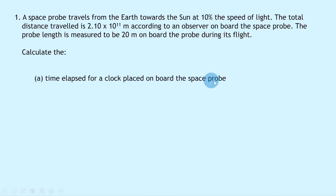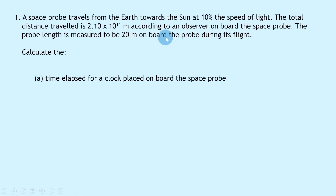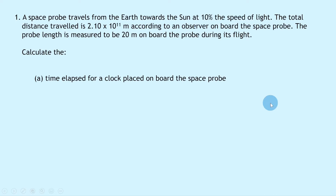Part A says to calculate the time elapsed for a clock placed on board the space probe. Because this time is measured on board the space probe, it's going to be the proper time t that we want. But we don't know the relativistic or dilated time, so we're going to have to find time using something else. We're given distance according to an observer on board the space probe and we're given the speed as 10% the speed of light.